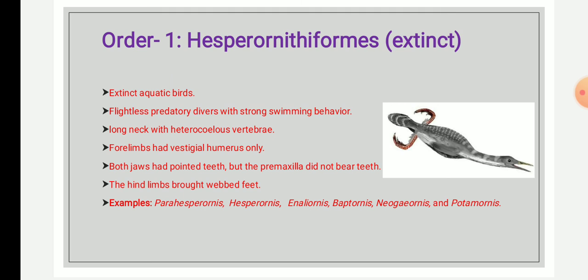They had a long neck with heterocoelous vertebrae. The forelimbs had only a vestigial humerus. Both jaws had pointed teeth but the premaxilla did not bear teeth. The hind limbs were modified into webbed feet. The example of this order is Hesperорnis.